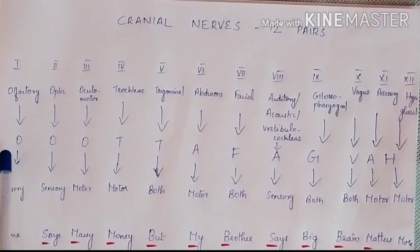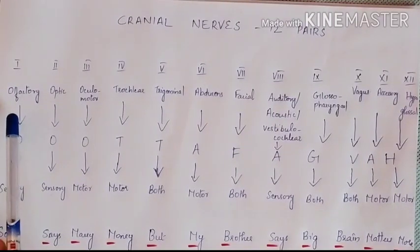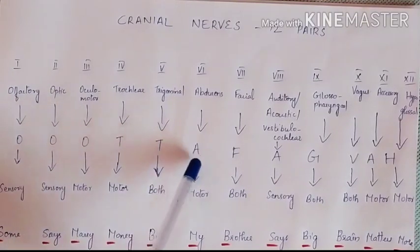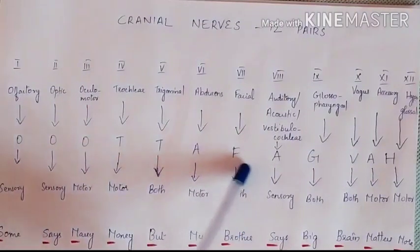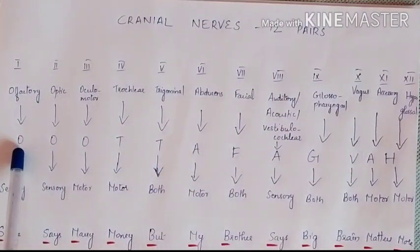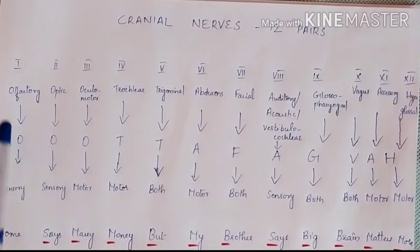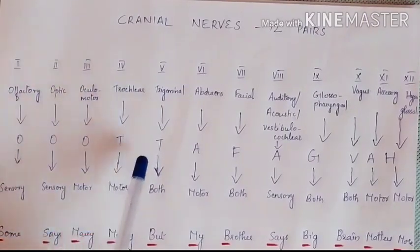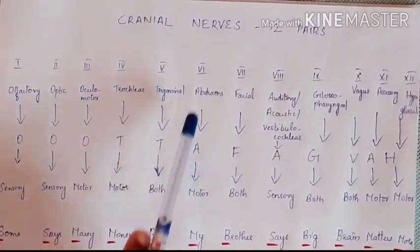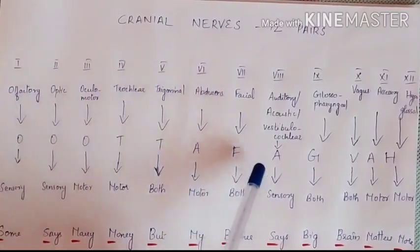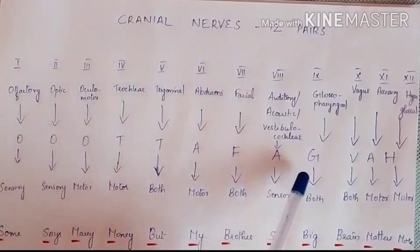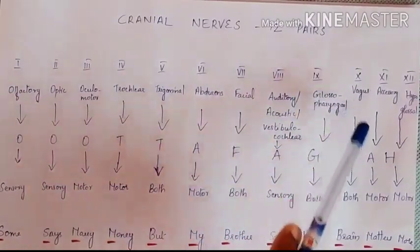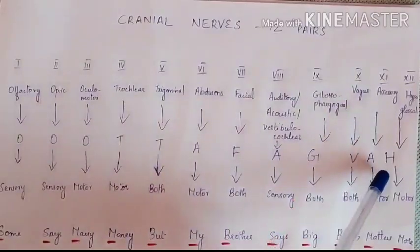The mnemonic to remember these cranial nerves is based on the first letters of each cranial nerve. We can say 'OOTA FAG VA H': O for olfactory, optic, oculomotor; T for trochlear; T for trigeminal; A for abducens; F for facial; A for auditory; G for glossopharyngeal; V for vagus; A for accessory; and H for hypoglossal.